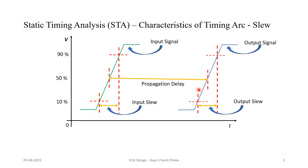Looking at the output side, the output transition time is when the output falls from 90% to 10%. The rate of change of the output signal in volts per nanosecond is the output slew. From the output slew value, we can interpret what the output delay is.